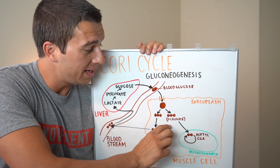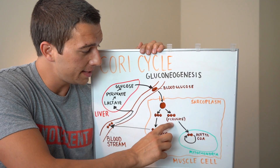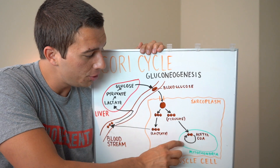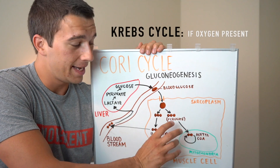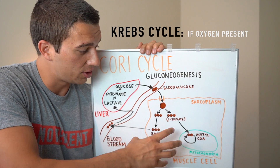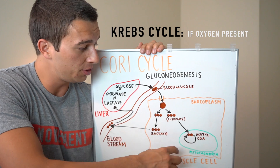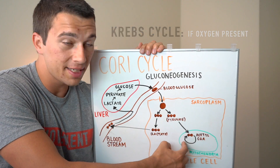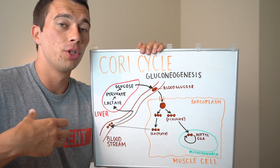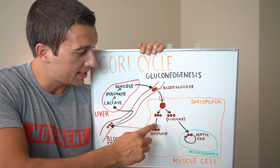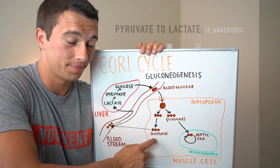Based on the environment of the cell, we may take that pyruvate and go into the mitochondria and enter the Krebs cycle. That is one route if there's oxygen available and there's mitochondria available to continue to metabolize that pyruvate. But let's just say we're running quickly, we're doing anaerobic activity — we're taking that pyruvate and we're going to turn it into lactate.